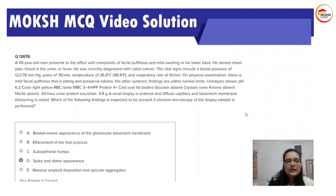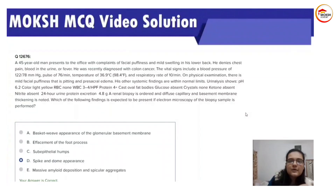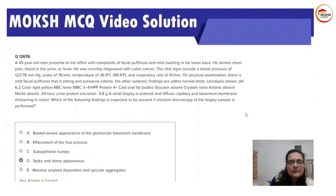The basket weave appearance in Alport syndrome occurs because there is antibody formation against type 4 collagen. The collagen is arranged in such a way that antibodies deposit and on immunofluorescence appear as a basket weave pattern.